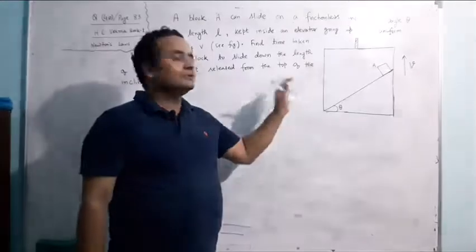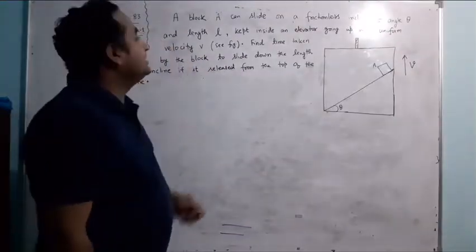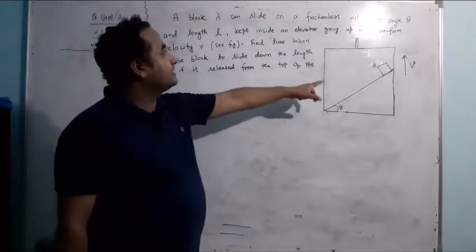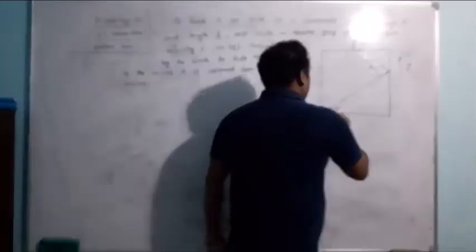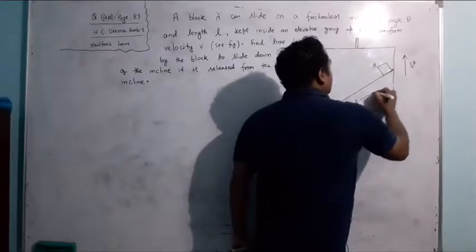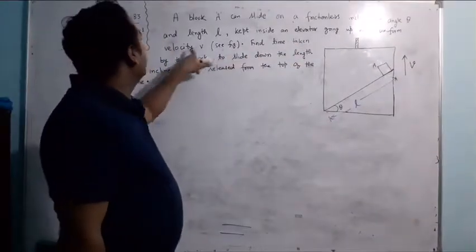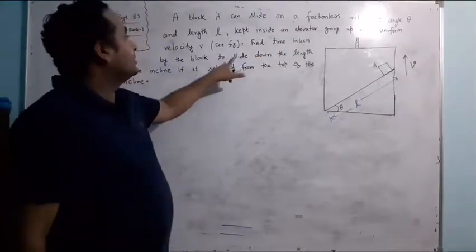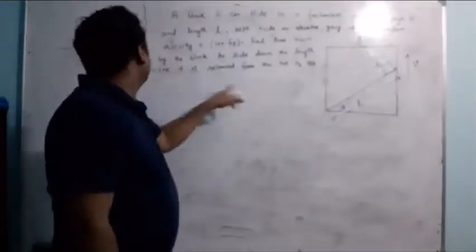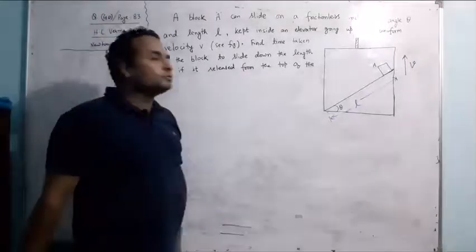Question number 40, Newton's Laws of Motion. S.C. Varma book, question 40 says that a block A can slide on a frictionless incline of angle of inclination theta and length L inside an elevator going up with uniform velocity. Find the time taken by the block to slide down the length of the incline if it is released from the top.